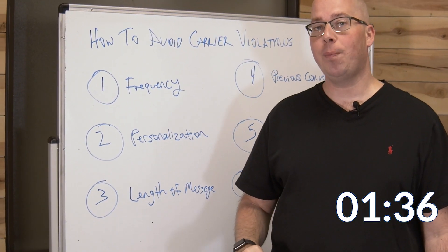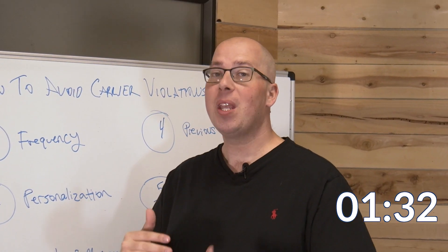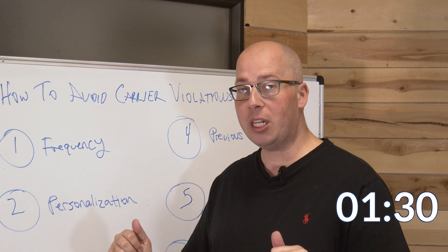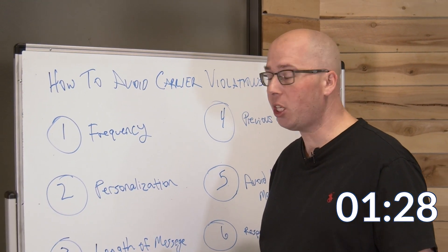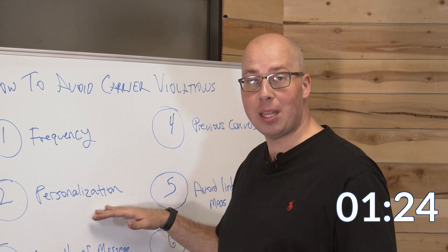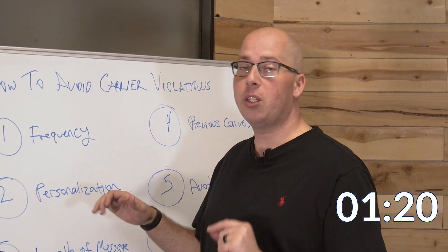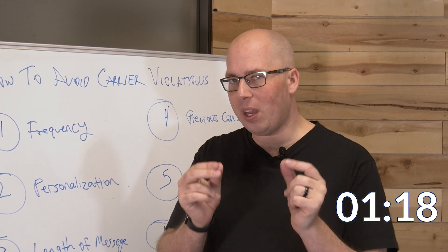Number two, personalization. If you send out the same message over and over again, it'll get caught. How do you change that? By personalizing each message, adding in the person's first name, maybe the time that the message is delivered, and other custom fields so that each message is slightly variant from another.